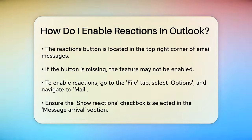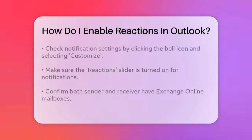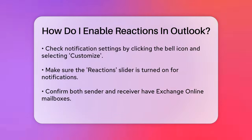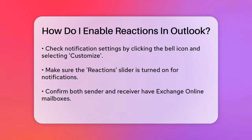Next, check your notification settings. Click on the bell icon in the top right corner of your Outlook screen, then select Customize. Ensure that the slider for Reactions is turned on. This will allow you to see reactions in your notifications feed.